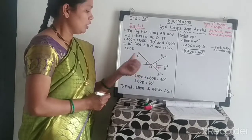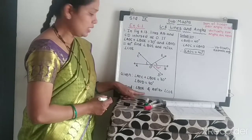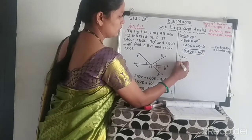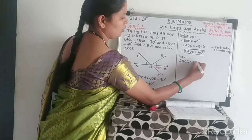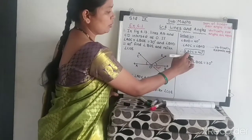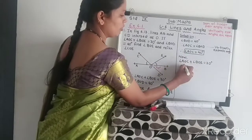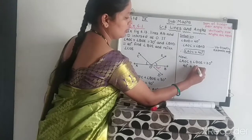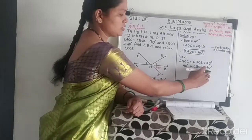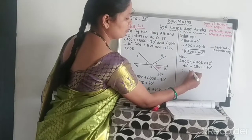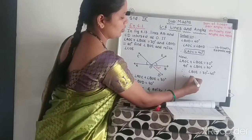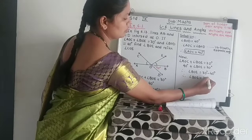Now we can find angle BOE. We know angle AOC + angle BOE = 70°. Substituting angle AOC = 40°, we get 40 + angle BOE = 70°. Transposing, angle BOE = 70 - 40 = 30 degrees.